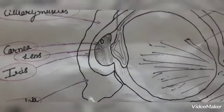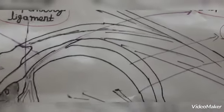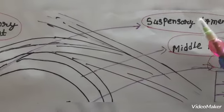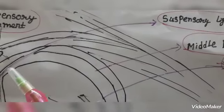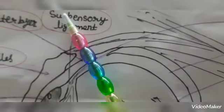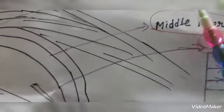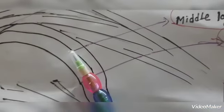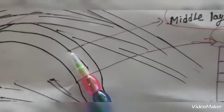Where their locations are. Here we can see conjunctiva, then sensory ligament. You can see here. Sensory ligament is present in both inner eye and front eye. Then comes middle layer, this is outer layer, this is middle layer.